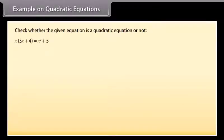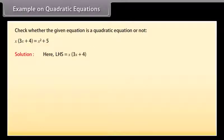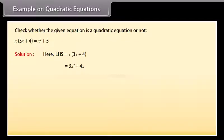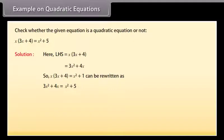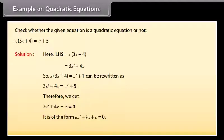We will now check whether the given equation is a quadratic equation or not. Here, LHS = x(3x + 4) = 3x² + 4x. So x(3x + 4) = x² + 1 can be written as 3x² + 4x = x² + 5. Therefore, we get 2x² + 4x − 5 = 0. It is of the form ax² + bx + c = 0, so the given equation is a quadratic equation.